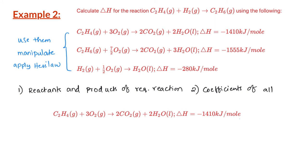We write down reaction 1: C₂H₄ plus 3O₂ gives 2CO₂ plus 2H₂O, with enthalpy change minus 1410 kJ. Next, let us look at H₂ gas. Hydrogen gas is on the reactant side of the required reaction with coefficient 1. In the list of given reactions, the only reaction with hydrogen gas is reaction 3, and in reaction 3 hydrogen gas is also on the reactant side with coefficient 1. So we can use reaction 3 without flipping or multiplying.